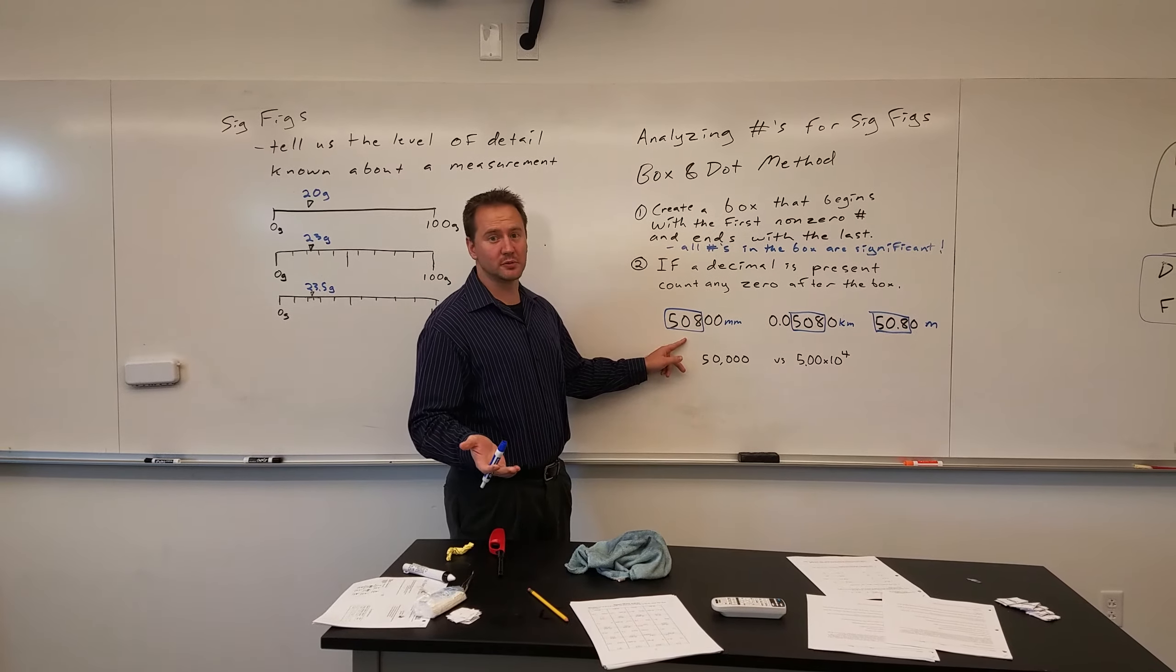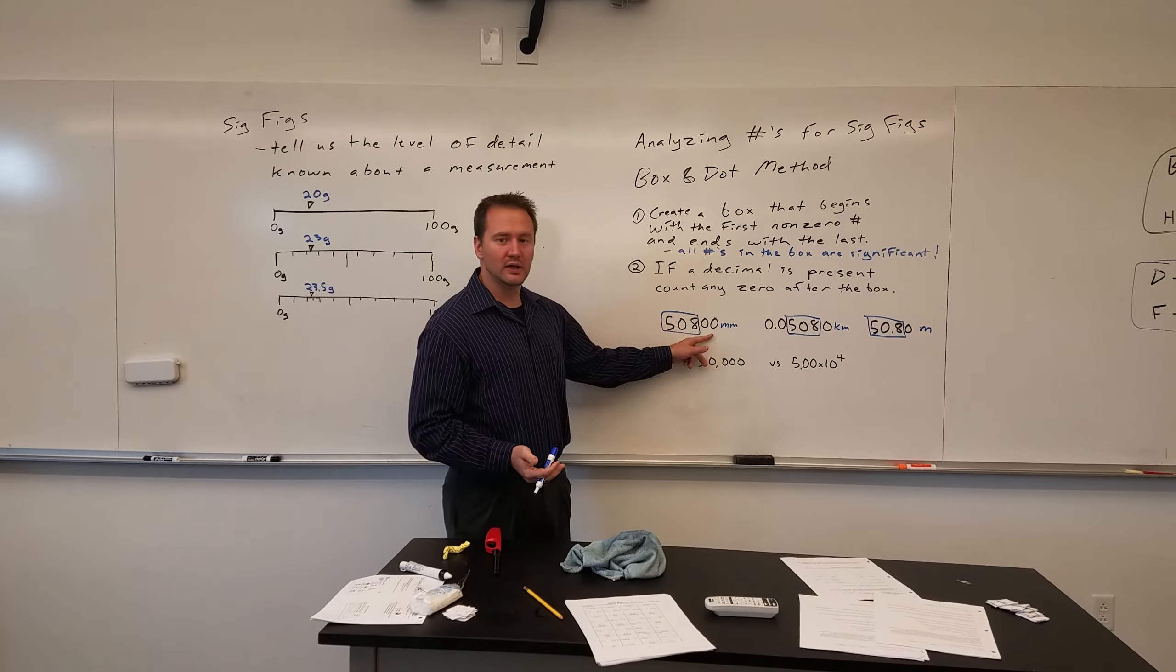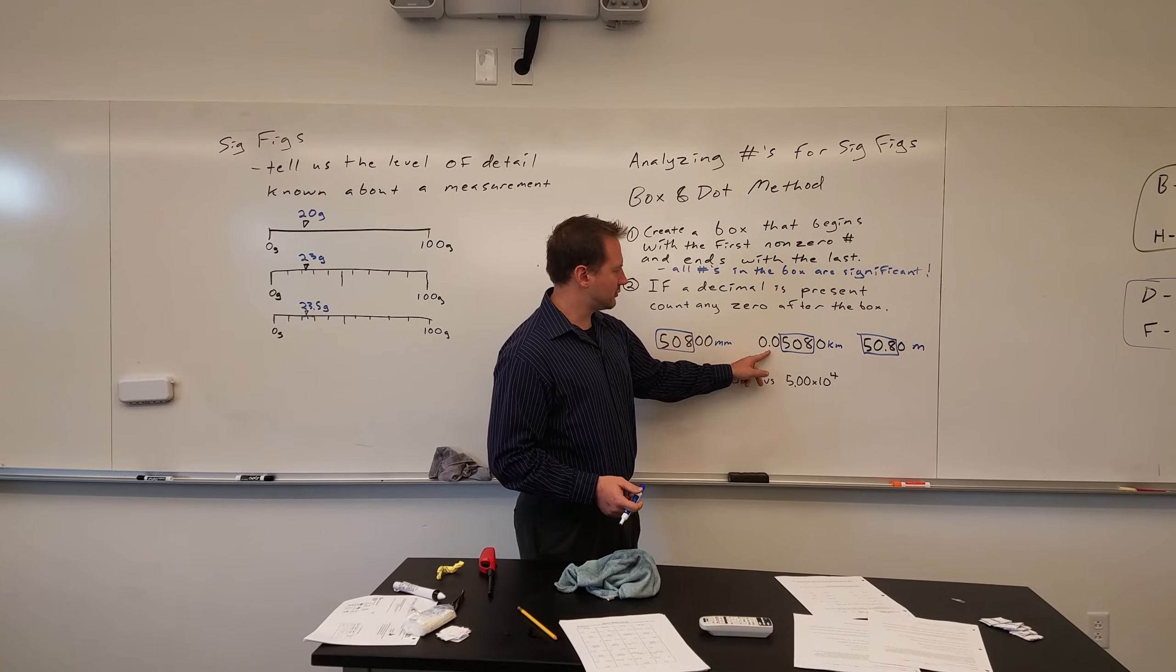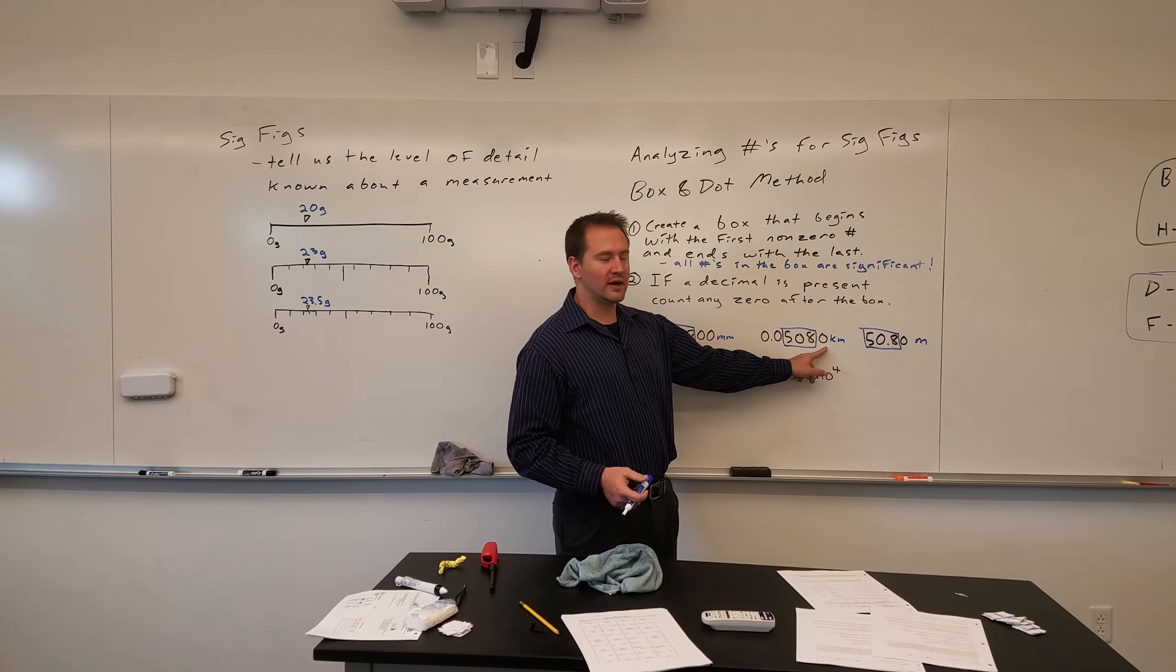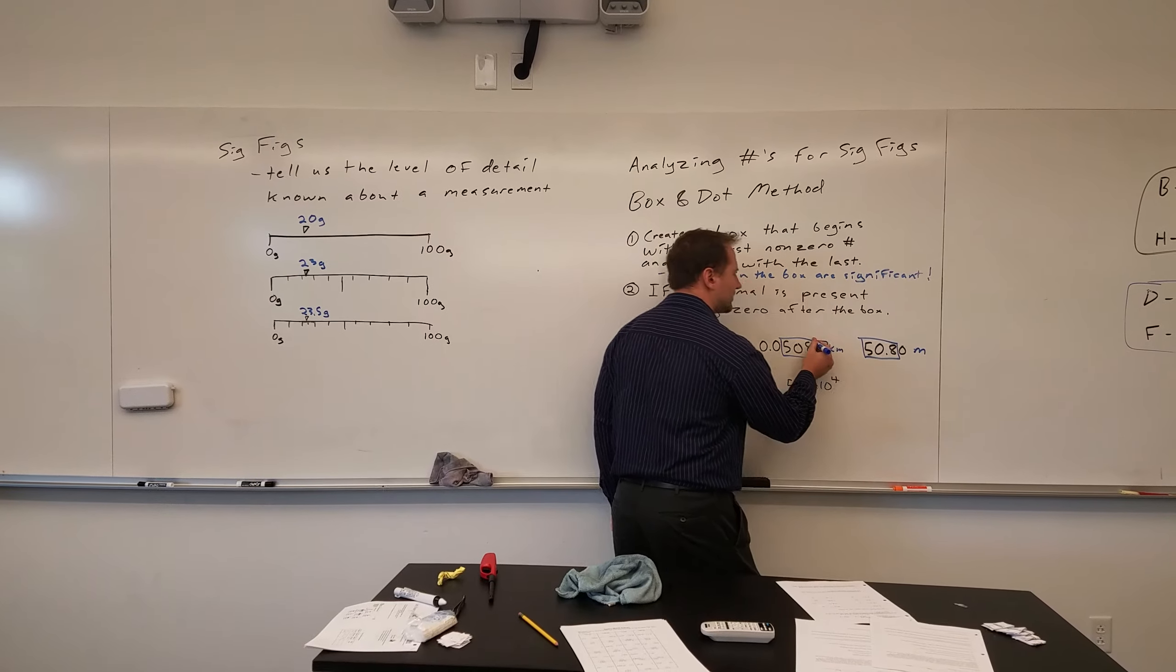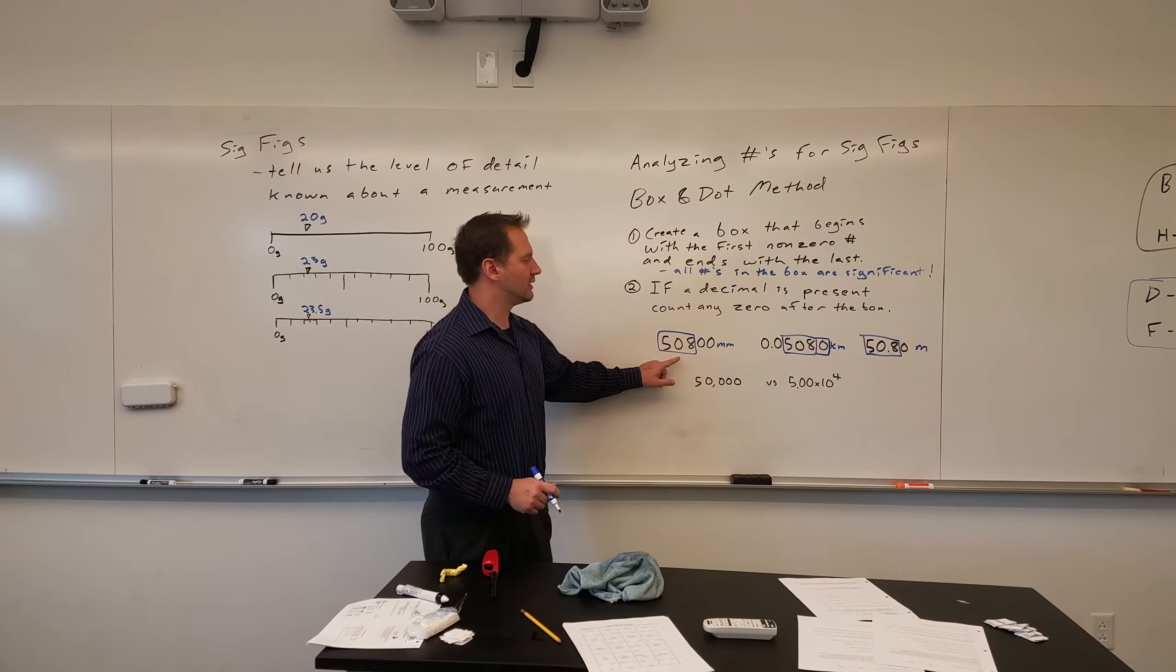In this first one, there's no decimal present, so you don't count those zeros. In this one, there's a decimal present, so that zero after the box counts. So this would have four significant figures, whereas this would only have three.